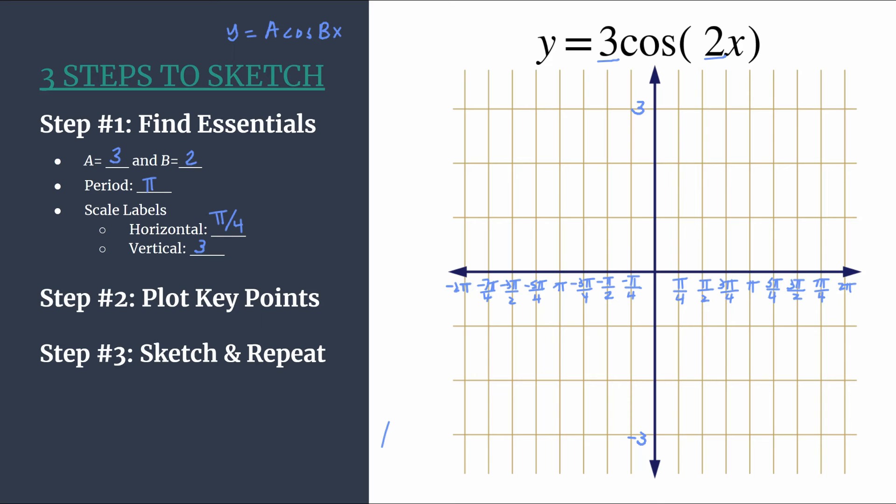And these will align with the tick marks because that was our design. So when plotting our first maximum, we know it's going to be on the y-axis and the y-coordinate should just be the value of a. So our first point, our maximum, will happen at 0, 3.